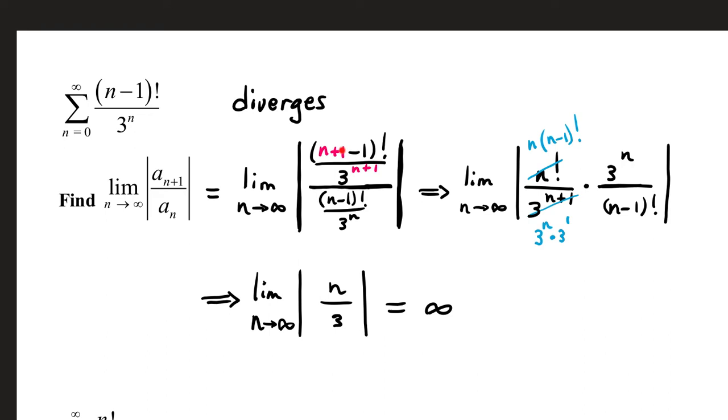We have the limit as n goes to infinity. That is n factorial over three to the n plus one. Now, by property of exponents, three to the n plus one can be written three to the n times three to the one. This factorial, n factorial, notice I've got two of them. If you take the larger one and rewrite it, you'll be able to cancel the smaller ones out.